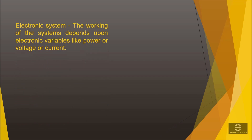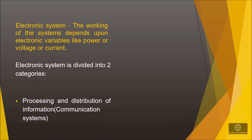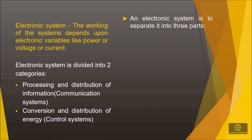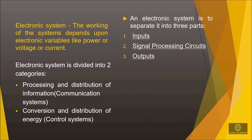All electronic systems used in our daily life depend upon electronic variables like power, voltage, or current, and hence are known as electronic systems. The electronic system is operated by electricity and it processes information taken from the input and converts it into the output for the next level of usage. Most electronic systems are divided into two categories: the communication system and the control system. In a communication system, processing and distribution of information happens, while in a control system, conversion and distribution of energy happens. An electronic system is divided into three parts: inputs, signal processing circuits, and output.